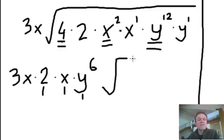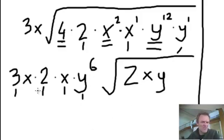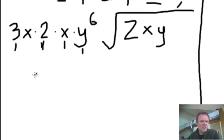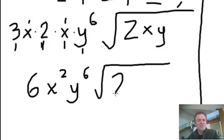Can you see what's still left inside? This 2, this x, and this y — those stay inside. Now I just need to tidy up everything outside. What's 3 times 2? That's 6. What's x times x? x squared. y⁶ is just y⁶ — nothing to combine it with, no other y's. So the answer has 6x² · y⁶ outside, with √(2xy) remaining inside.